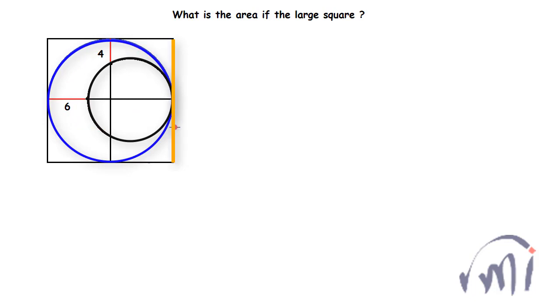This side of the square is a common tangent to both the blue and black circles. We are given that this length equals 4 units and this length equals 6 units, and we need to find the area of the large square.